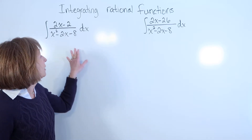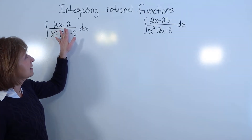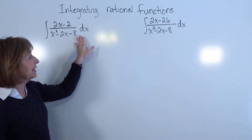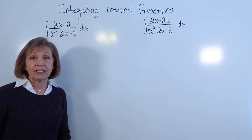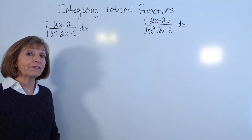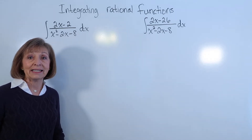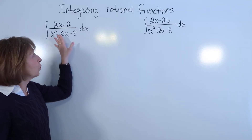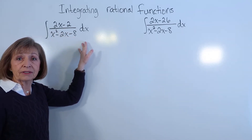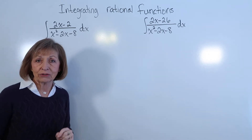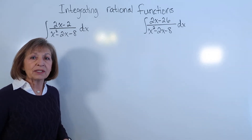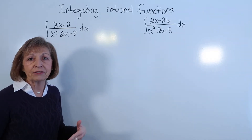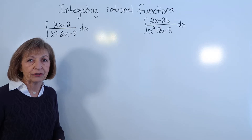For our first example, we have the integral of (2x minus 2) over (x squared minus 2x minus 8) dx. When looking at integrating a rational function, the very first thing is to check if I have a monomial denominator — just one term or several terms. This one has several terms in the denominator, so I can't just break the fraction up, simplify the individual fractions, and integrate term by term.